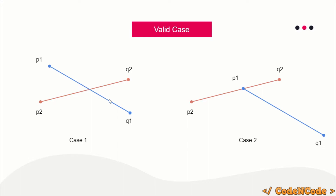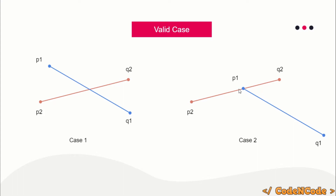So the orientation of these two points are different, so we are good. Now take the other line and find out the orientation of the endpoints of the first line. P1, Q1, Q2 is counterclockwise and P1, Q1, P2 is clockwise. The orientation of all of them should be different — when you take this line, the orientation of these two points should be different, and when you take this line, the orientation of these two points should be different, and this condition must hold for both lines. If the orientations were the same, for example if P1 and Q1 were both clockwise, then P2 would be on the same side and they would not be crossing.